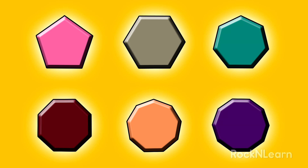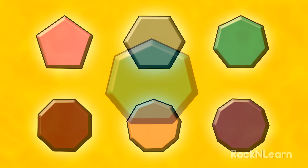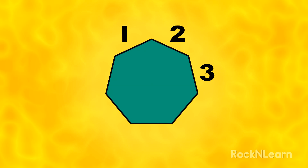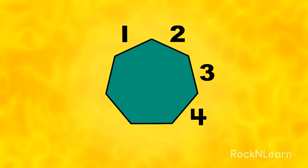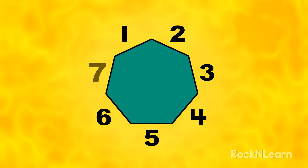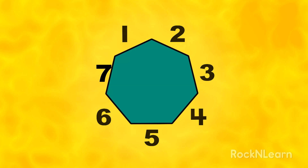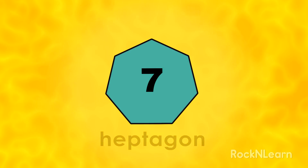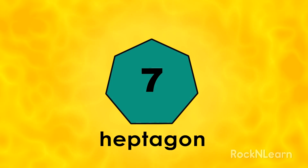Point to the turquoise shape. Let's count the sides. One, two, three, four, five, six, seven! A shape with seven sides is called a heptagon. Heptagon!